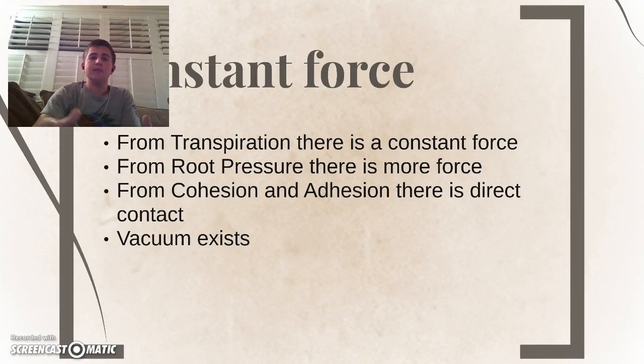So, putting everything together that we have so far. From transpiration, there's a constant force. From root pressure, there's a significant force. From cohesion and adhesion, there's a direct and constant contact. And finally, a vacuum exists. All of these factors combined make it very hard for an actual living cell to survive and support the flow of the xylem, which is why, over time, the xylem have had to develop dead cells.